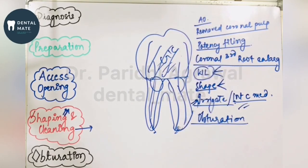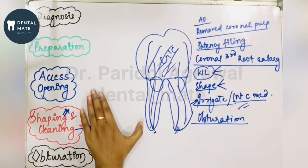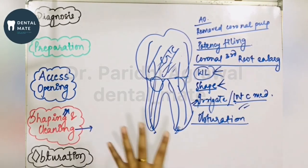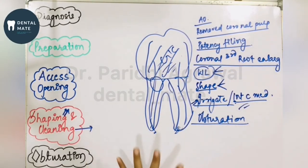Finally, you do a GIC restoration in the tooth and place a cap over it. This is the basic procedure of root canal treatment. We will be discussing each step in detail, starting from access opening, in the coming video lectures — so stay tuned, keep visiting, thank you.